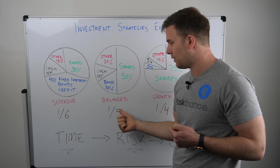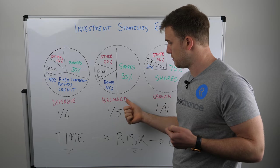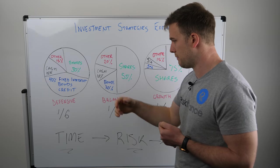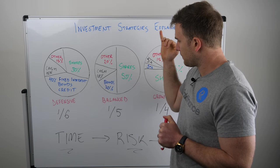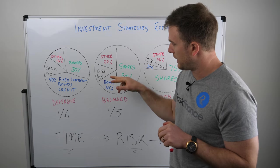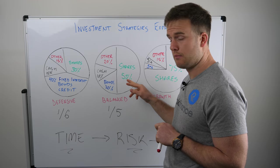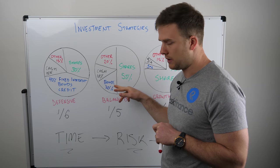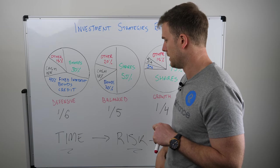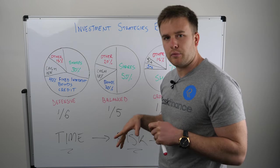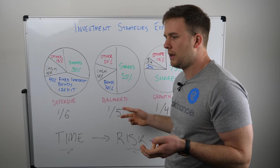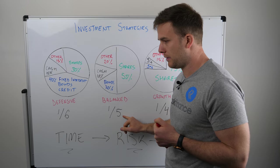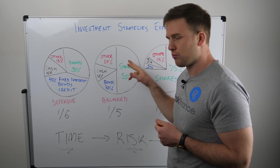Moving on — a balanced strategy. This is very common and I think almost all Australian super funds that accept new members are required to offer one. Let's look at the allocations: 50% is in shares — remember shares are riskier — so in a more balanced strategy there are more risky investments and fewer conservative ones. You've got 20% in bonds, 10% in cash, and 20% in other assets. From a risk perspective, you might expect this investment to go backwards about one in every five years, which is more often than defensive, because there's more risk in the portfolio.